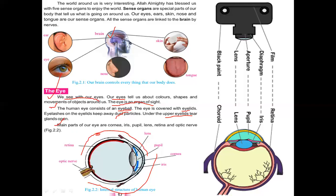Now we will see the internal structure of the eye. The internal parts are: cornea, iris, pupil, lens, retina, and optic nerve — these are the major eye parts. Looking at this diagram, it tells us that the eye is a natural camera, very similar to a camera used to capture pictures and scenes, with different parts that resemble those of a camera.